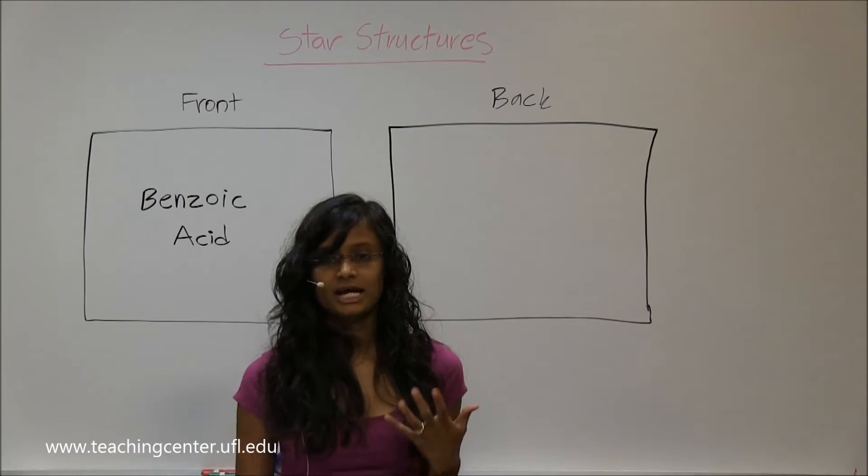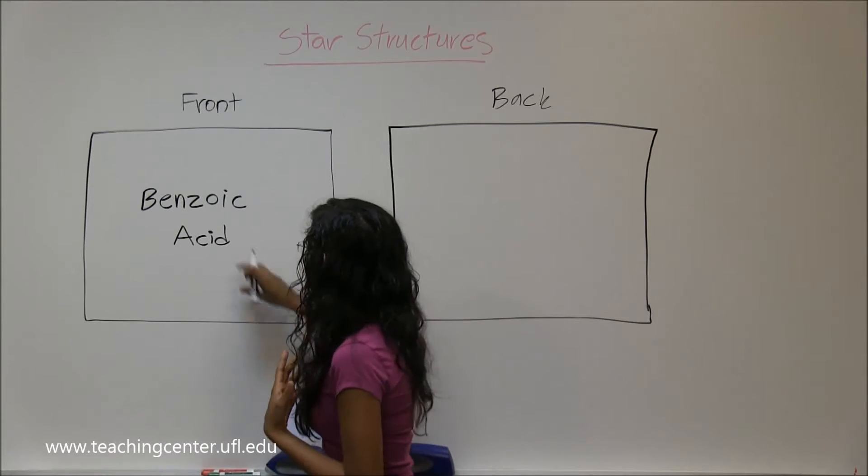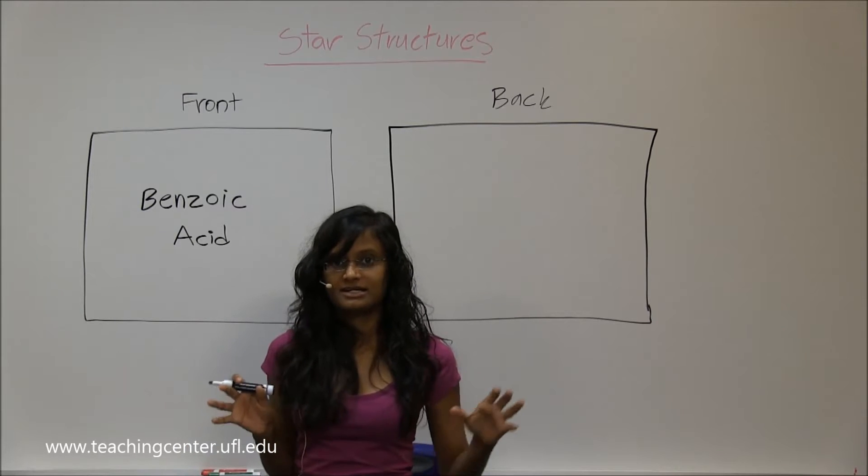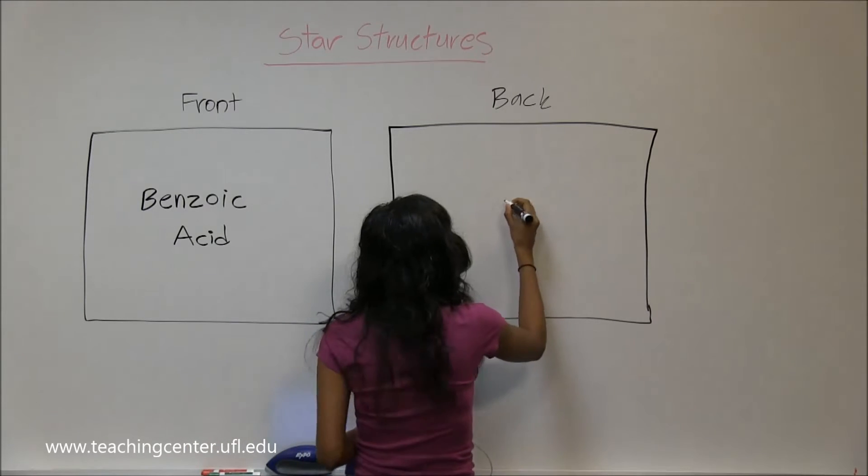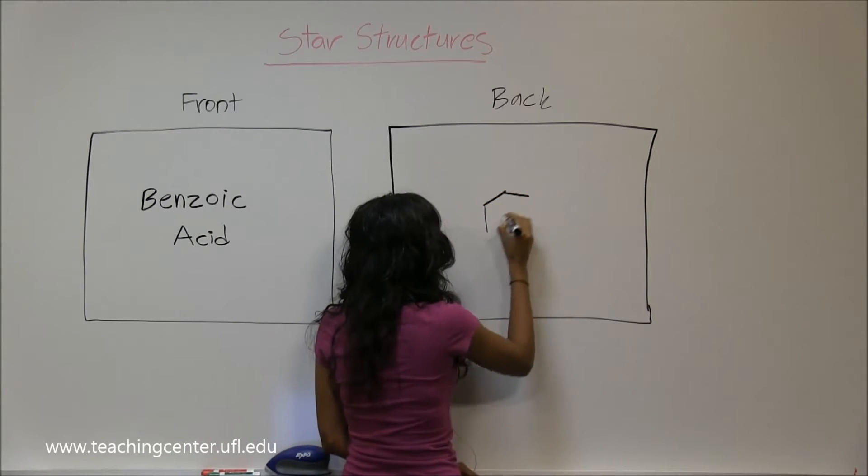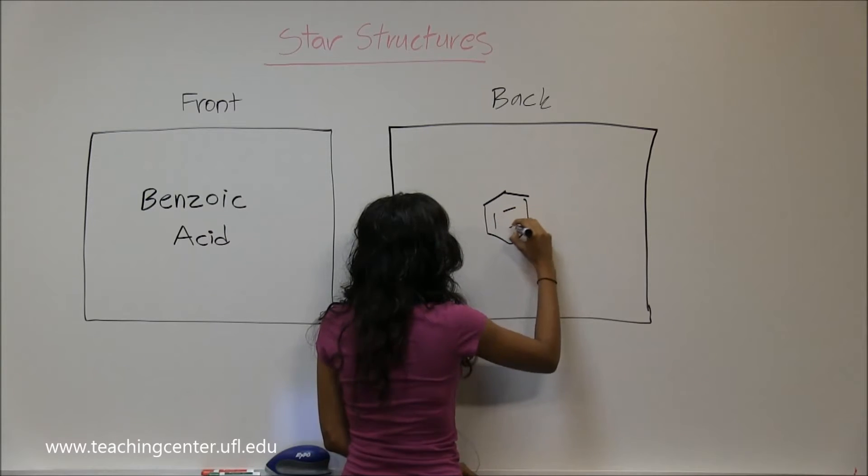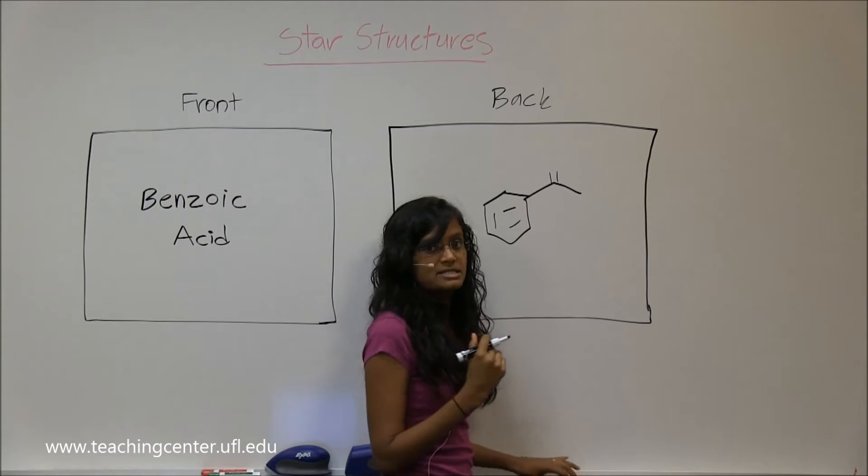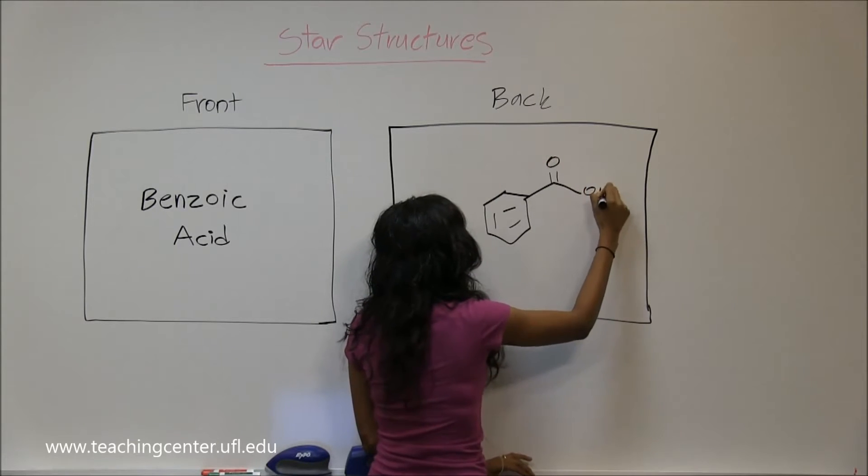So benzoic acid is again something with benzene. IC acid means carboxylic acid on there, so we have a benzene ring and an additional carbon off of the benzene, and that's where you have your carboxylic acid group.